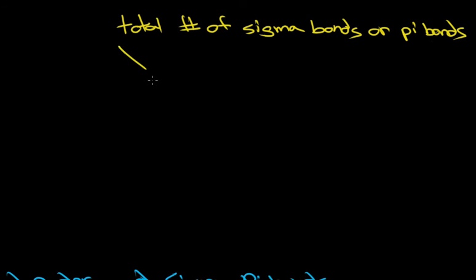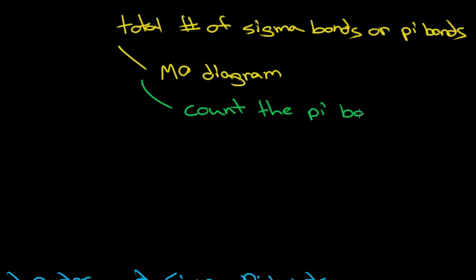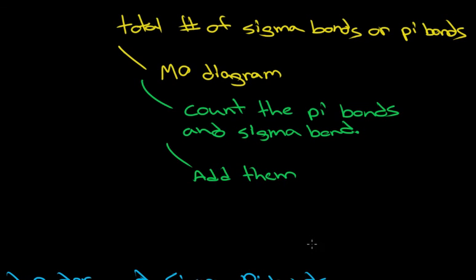What we do is we make a molecular orbital diagram of the two atoms. Then, we count the pi bonds and sigma bonds. We just make a diagram, and we count the pi bonds and the sigma bonds.